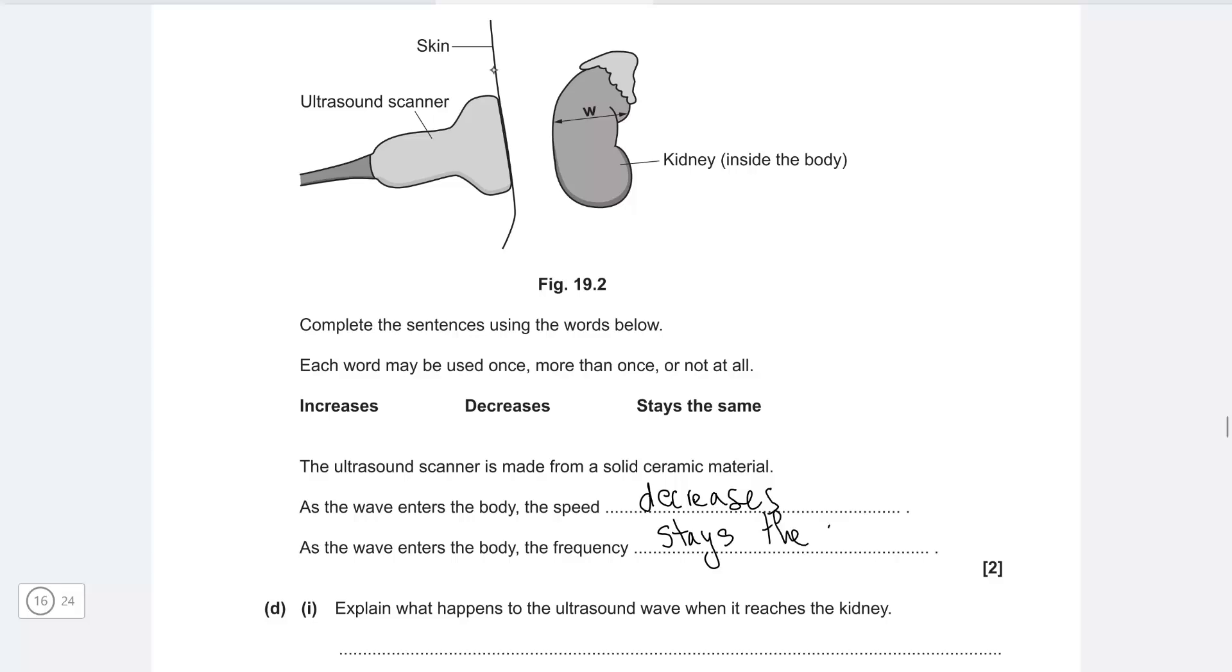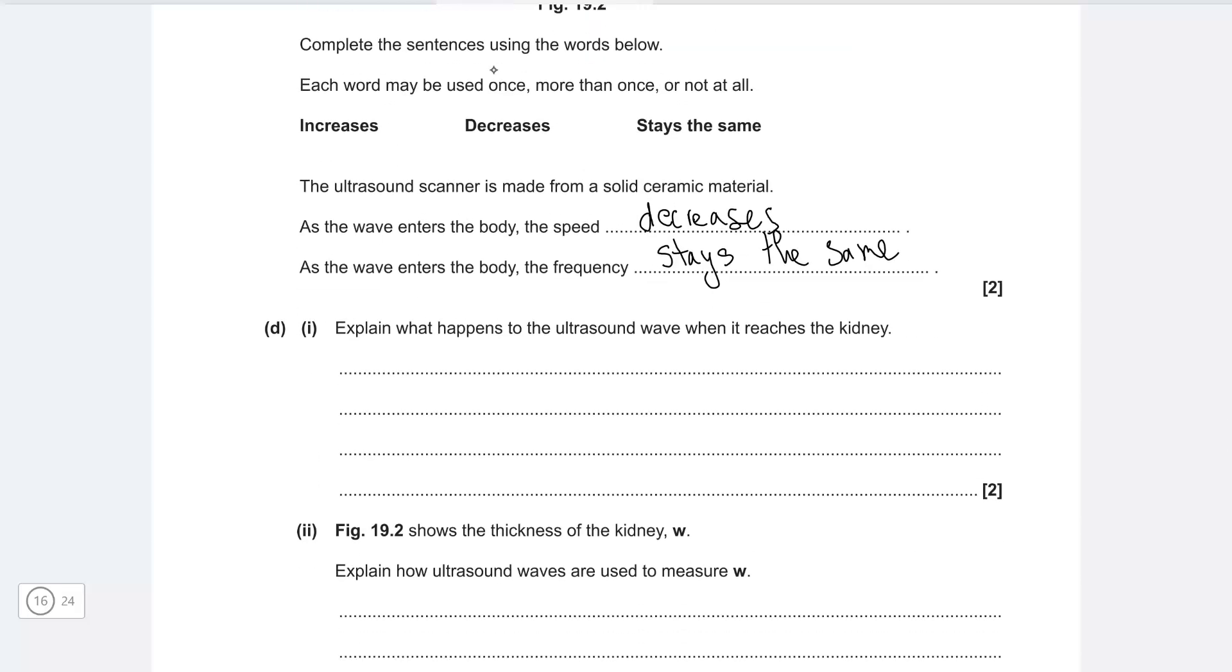Explain what happens the ultrasound wave when it reaches the kidney. Well there will be some partial reflection and some partial absorption so the strength of the signal will decrease because a little bit will be absorbed but some of it will be reflected backwards and this happens at the front of the kidney.